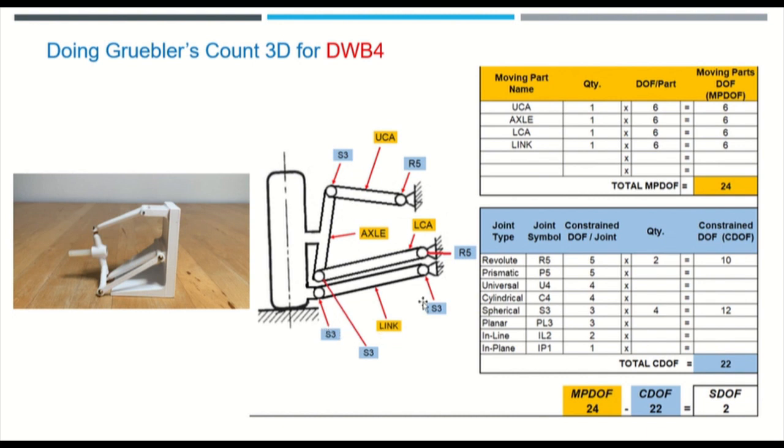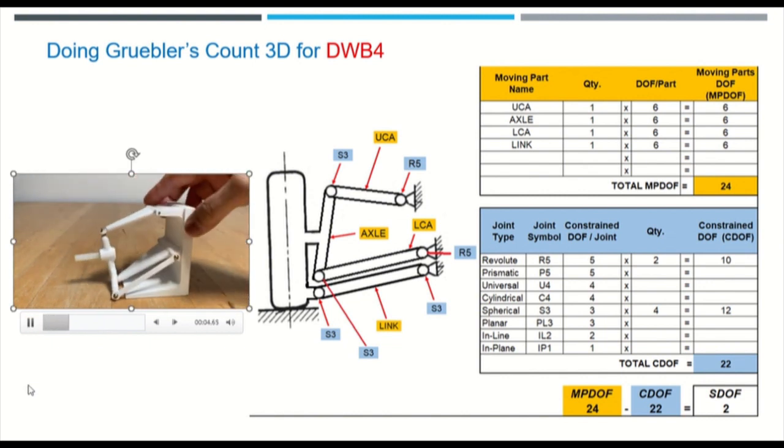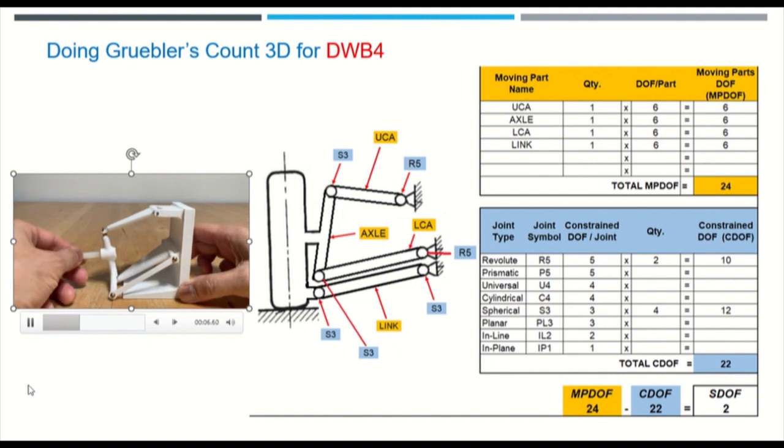And with two added spherical joints at the end of the links, now we have a constrained degrees of freedom of 22. So 24 subtract 22 is also positive two. But now we can see that the mechanism can rotate up and down.